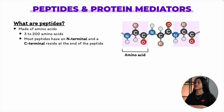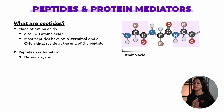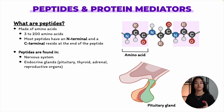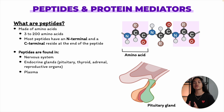Peptides are found throughout the body. They exist in the nervous system as neuropeptides, as well as in the endocrine glands or endocrine organs like the pituitary, thyroid, adrenal glands, and reproductive organs. You can also find them in plasma, the heart, and the vascular endothelium. These small molecules are involved in a wide range of functions, though we still don't fully understand all their roles.